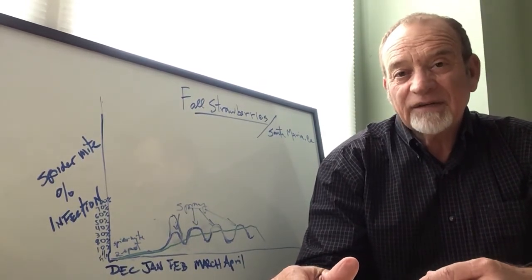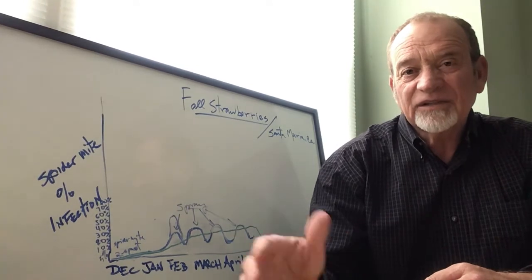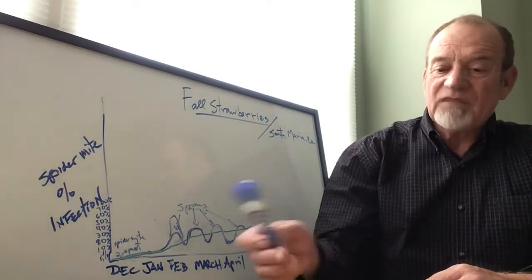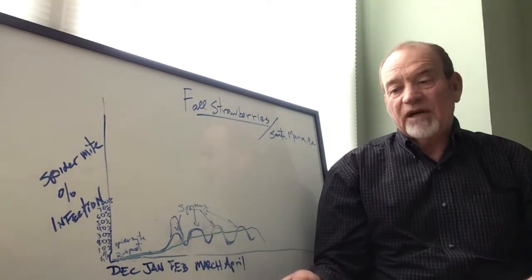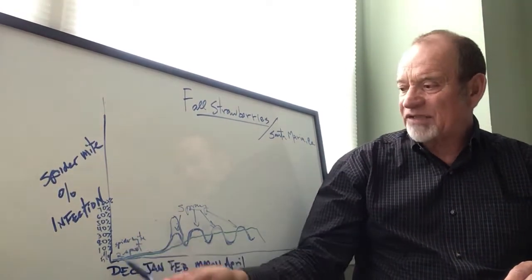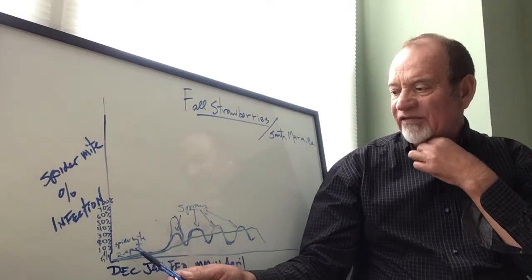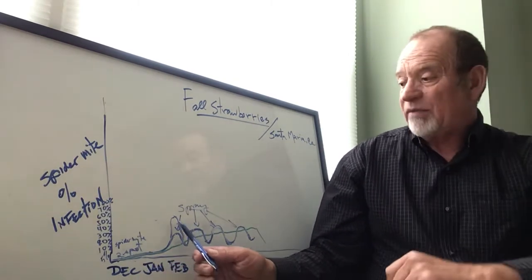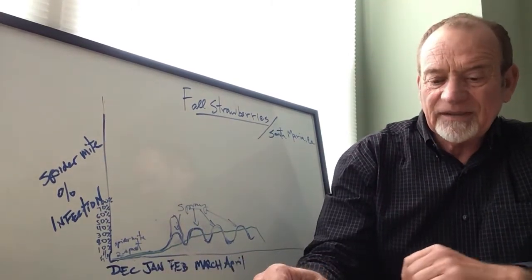If we have hot spots, either I release more persimilis or californicus, or I spray again. That's what this graph is telling us: the rate to figure out the rates between the predator and the pest.